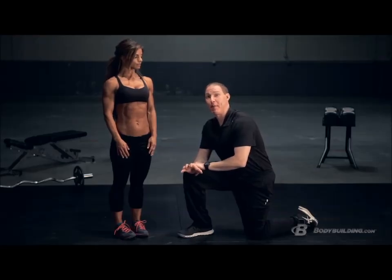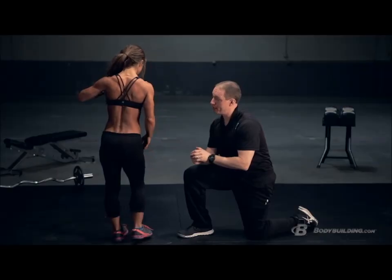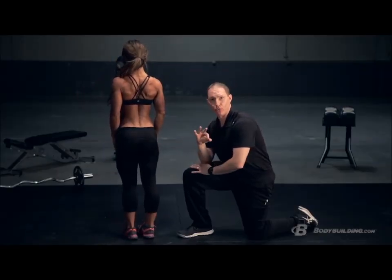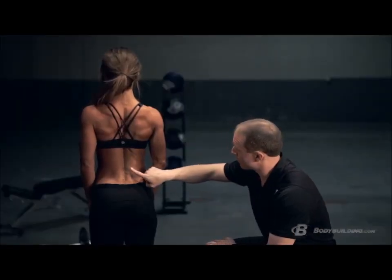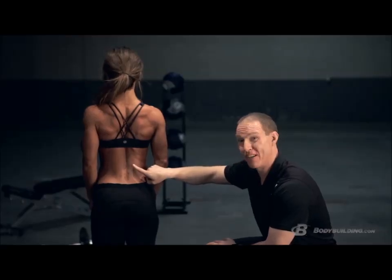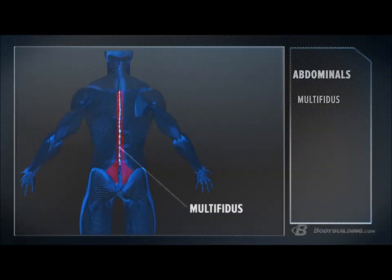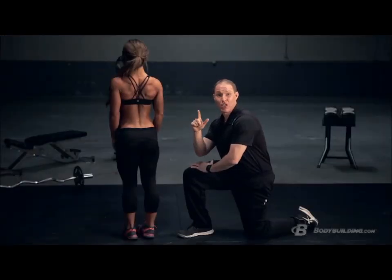Last but not least, we're going to show you the muscles on the back side — your posterior core. We're going to focus on three main muscle groups. First, you've got these really small muscles that span about two to four segments of your spine called multifidi. You'll never see these muscles, but they're important because they give your spine feedback to your brain as to where it is in space, and they help you control small movements throughout your spine.